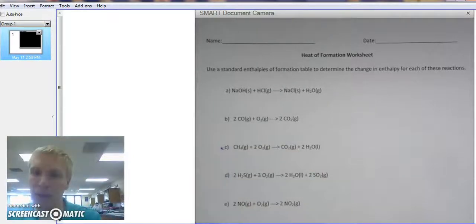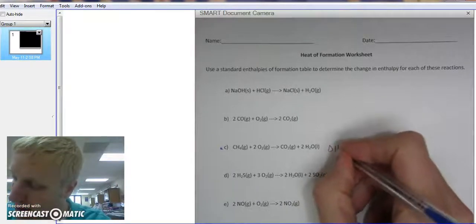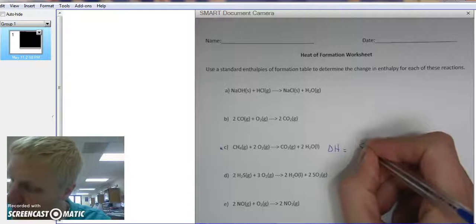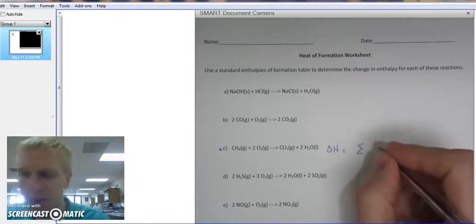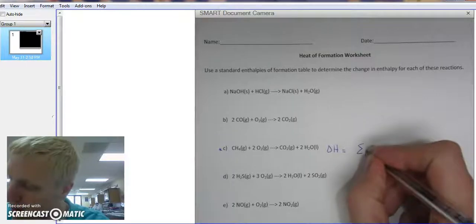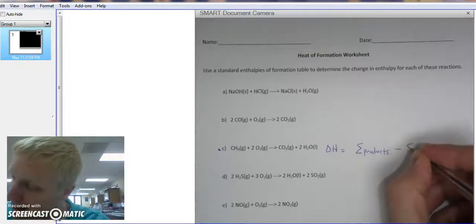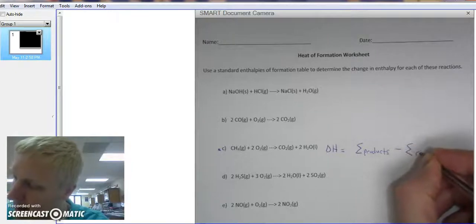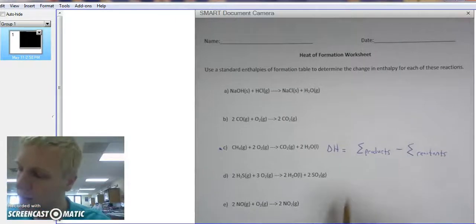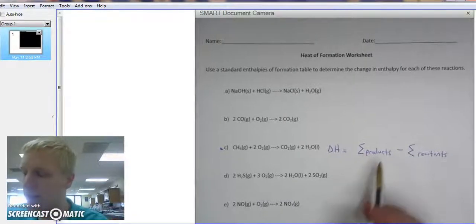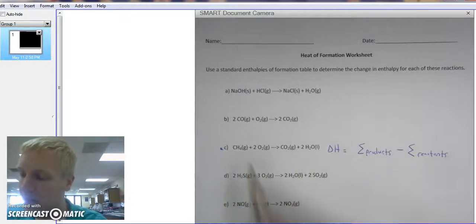What we've got to remember when we're finding delta H, it equals this Greek sigma sign, which means sum—sum of the products minus the sum of the reactants. We're talking about the heat of formation, the sum of the heat of formations of all the products minus that of all of the reactants.